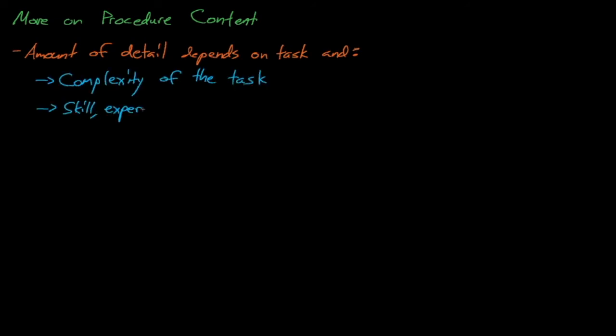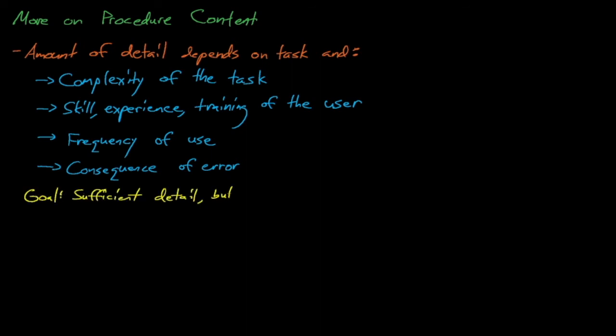A procedure that is too long is also bad. How many of us skim through instruction manuals and try and single out the stuff that we actually need to read to do the job? With procedures, shorter is usually better, and the amount of detail that we should include in a procedure will depend on the complexity of the task, the skill, experience, and training of the operator, the frequency of the task, and the consequence of an error. A procedure for skydiving or tightrope walking should probably be pretty detailed. Our goal should be to provide enough detail for the operators to do their job and to provide no additional unnecessary detail.